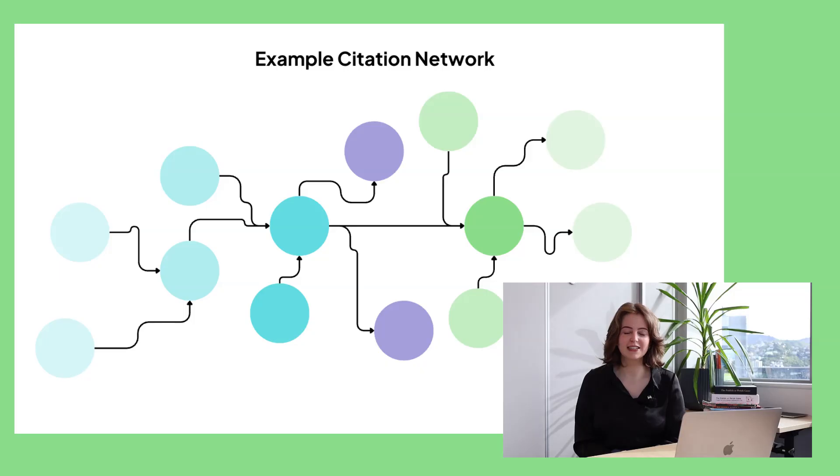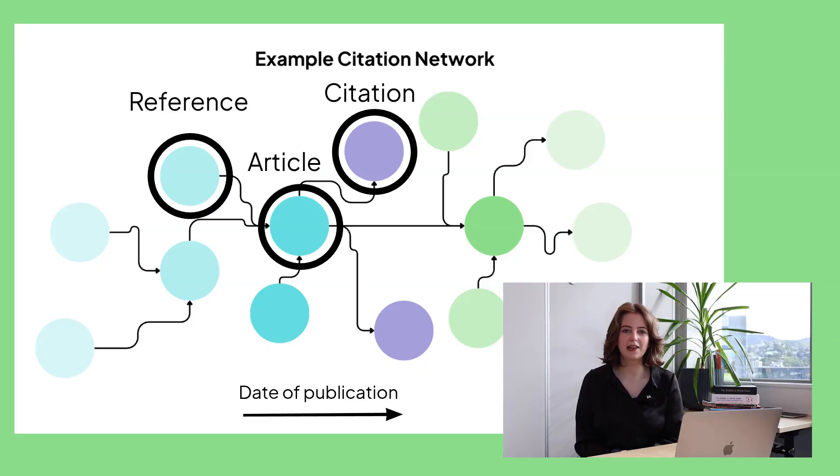At the heart of Research Rabbit is something called the Citation Network, which looks at how papers are linked together through citations and references. Instead of giving you just a static list of results, Research Rabbit shows you the citations and references between papers to show how they're linked through topic, time, and idea. Now that we've explained that, let's get into how to use Research Rabbit's Citation Network in your search for new literature.